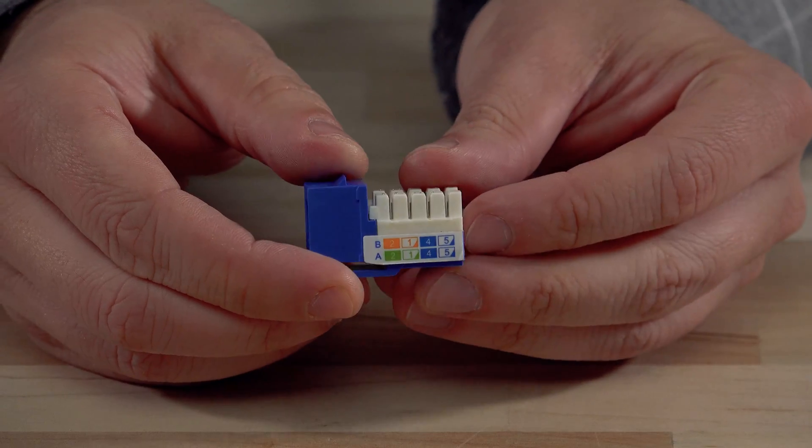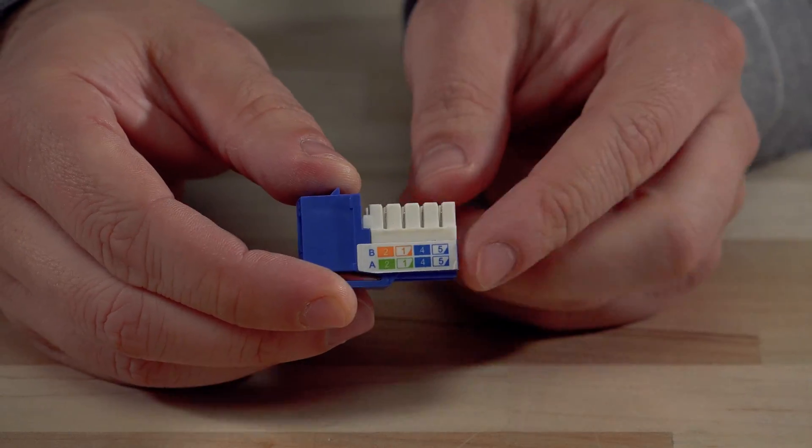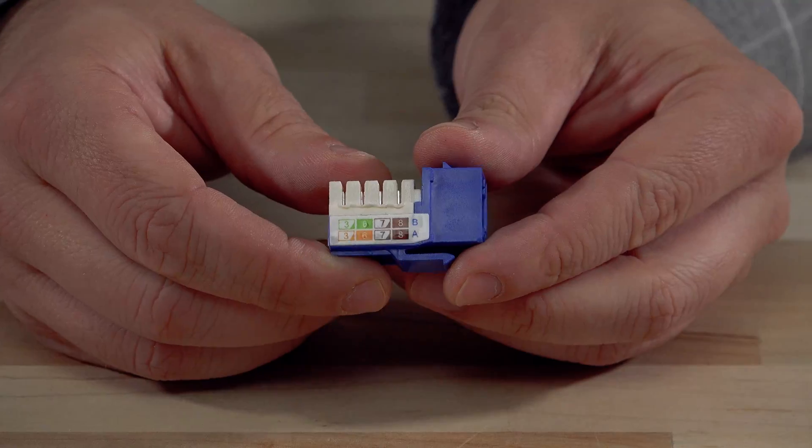Next up we have our keystone jacks. These will have either 568A or B labeled on each side to help you identify which wiring is being used.